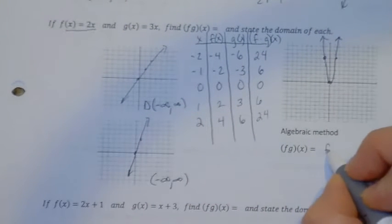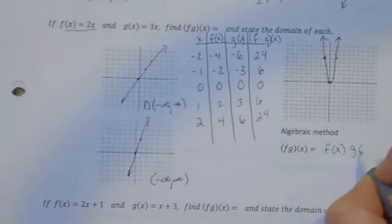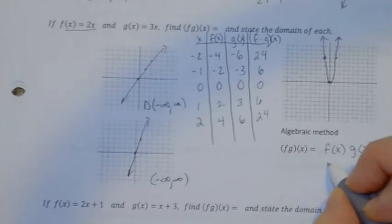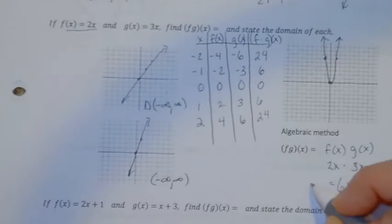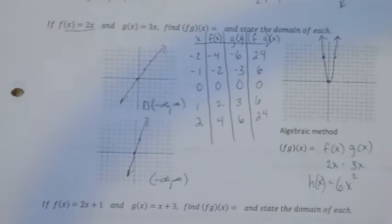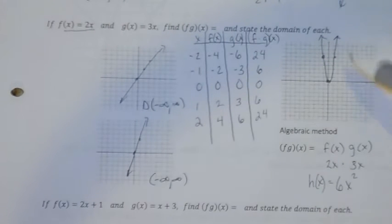So if I multiply the f function times the g function, the f function was 2x times the g function, which is 3x. And 3x times 2x is 6x squared. So that's the new function that was created by multiplying.